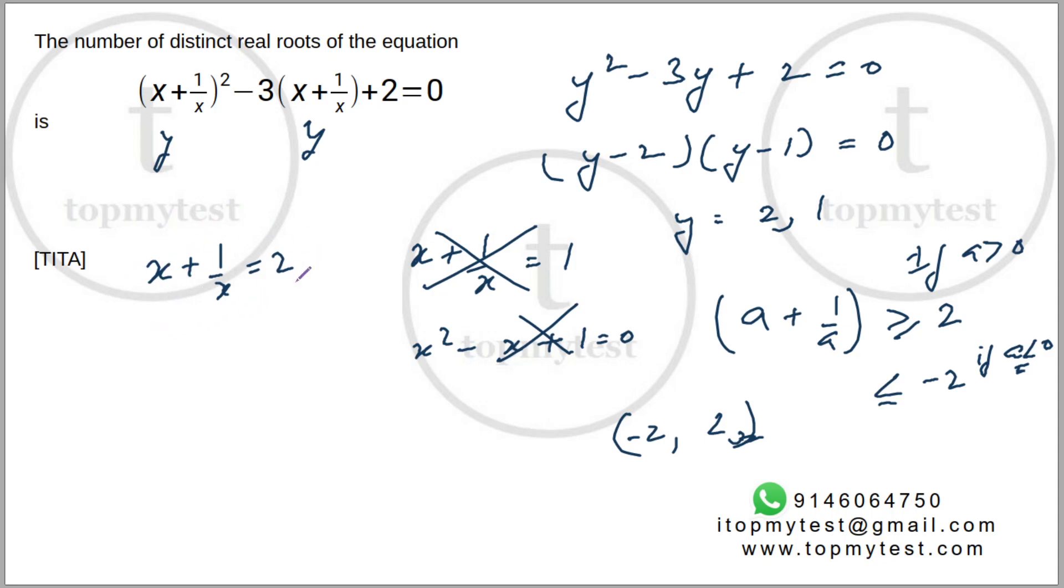For x + 1/x = 2, you get one solution, which is possible only when x = 1. That's the lowest possible value.